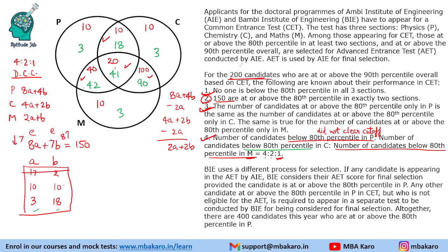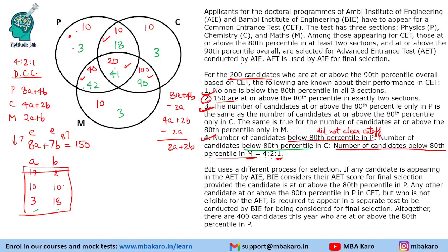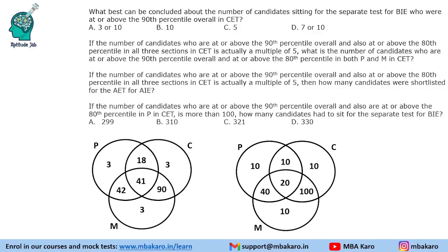Altogether there are 400 candidates who are at or above 80th percentile in P. Those eligible for AIE are the people who cleared two or three cutoffs. Those who cleared physics cutoff but not more than one cutoff are considered for BIE's separate test — so either 3 or 10 people from our diagram.